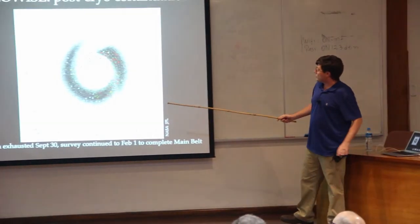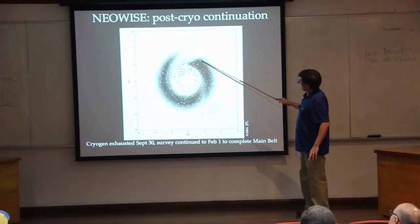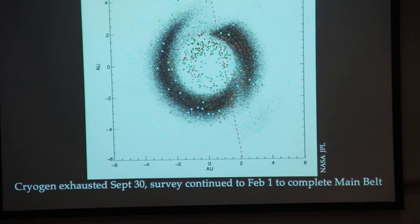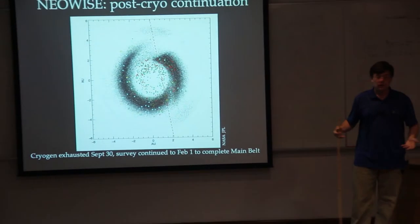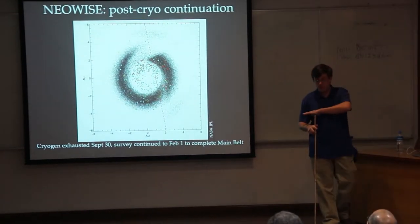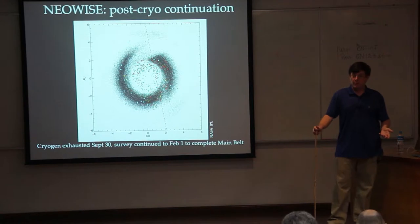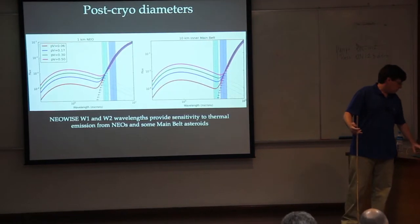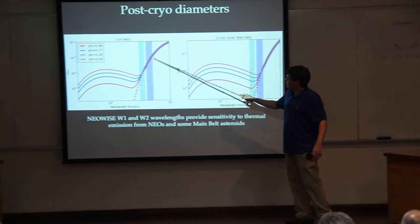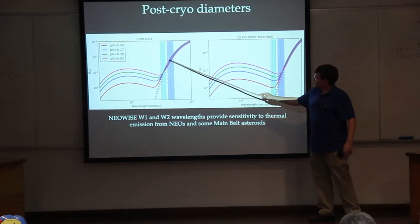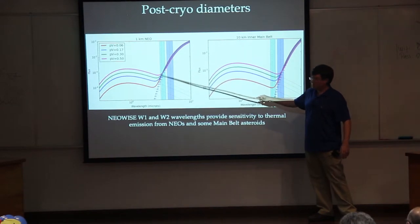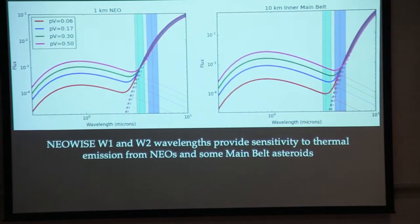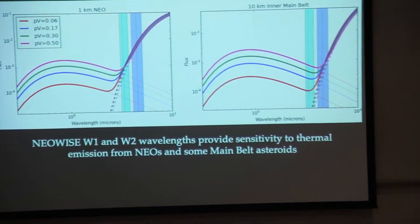So you can see this was the final plot of all of the objects we detected. You can see this gap here again, that's where we ran out of cryogen, but we continued in a post-cryogenic survey to finish the survey of the main belt. We didn't know that we would get another chance. In post-cryo, again, this is the same SED plot just now with the two shortest wavelengths. You see that you have thermal emission dominating band 2, and sometimes it's dominating band 1, sometimes it's not. Whereas in the main belt, you still have sensitivity, but you don't have that same control over the thermal behavior, so we don't really have as good information in the main belt in the post-cryo survey.